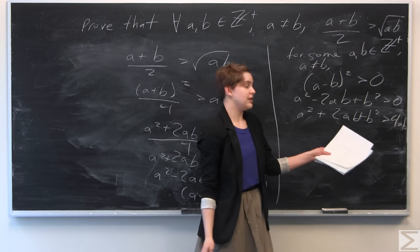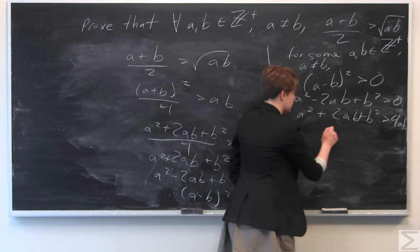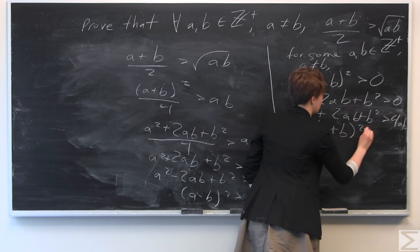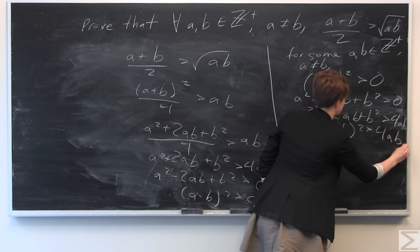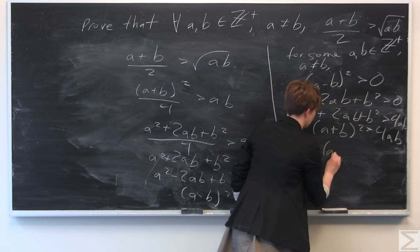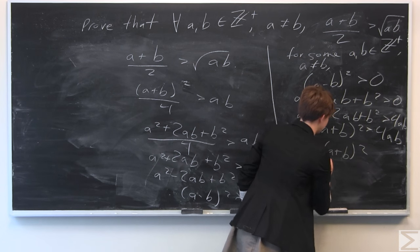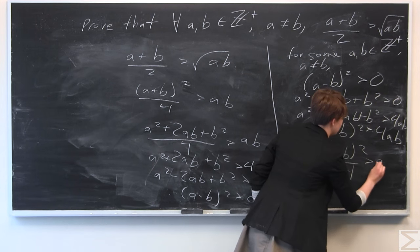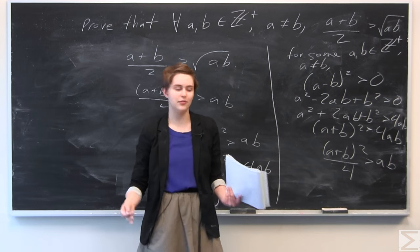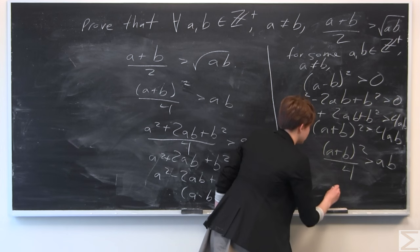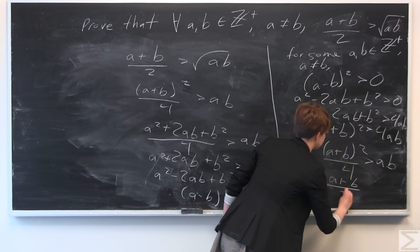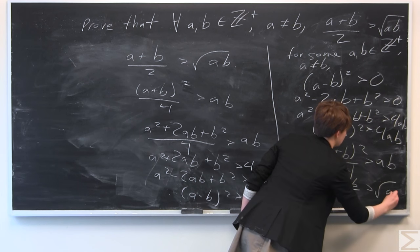We factor the left side back into a plus b, quantity squared, is greater than 4ab. Then we divide both sides by 4: a plus b quantity squared over 4 is greater than ab. Finally, we take the square root of both sides, and we're left with our original statement: a plus b over 2 is greater than the square root of ab.